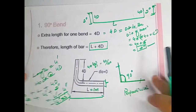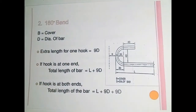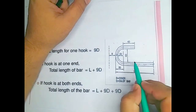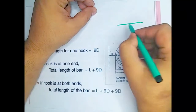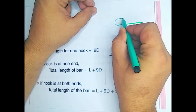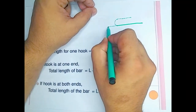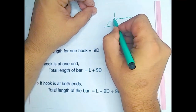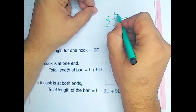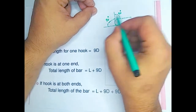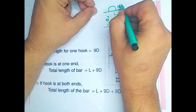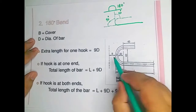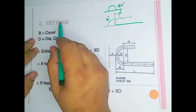Now, what is a 180 degree bend? It means the bar will be bent 180 degrees from its horizontal position — like this. This creates 90 degrees on one side and 90 degrees on the other side, making a total of 180 degrees. The variable B represents the concrete cover.